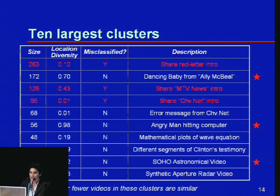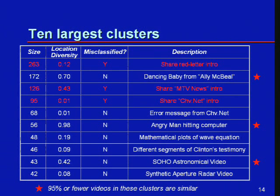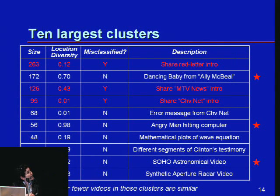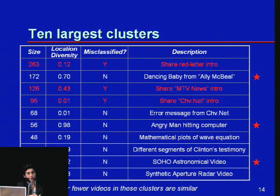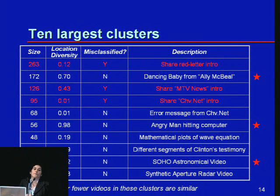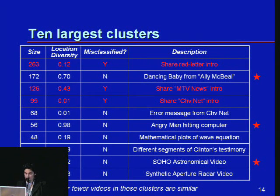This table shows what kinds of videos those were. On the left you have the set of largest clusters — the largest cluster had 263 similar videos with a location diversity of 0.12, described as a 'share red-letter introduction.' One we saw a lot of was the dancing baby from Ally McBeal. The Clinton testimony appeared quite a bit as well. Location diversity indicates how diverse the web pages were where those videos were located. The red columns indicate that fewer than 95% of videos in those clusters are truly similar.